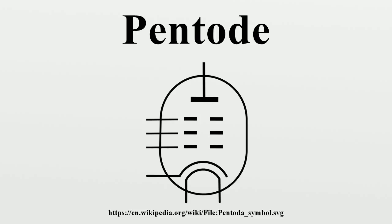Triode-strapped pentode circuits: A pentode can have its screen grid connected to the anode, in which case it reverts to an ordinary triode with commensurate characteristics. The device is then said to be triode-strapped or triode-connected. This is sometimes provided as an option in audiophile pentode amplifier circuits to give the sought-after sonic qualities of a triode power amplifier. A resistor may be included in series with the screen grid to avoid exceeding the screen grid's power or voltage rating, and to prevent local oscillation. Triode connection is a useful option for audiophiles who wish to avoid the expense of true power triodes.